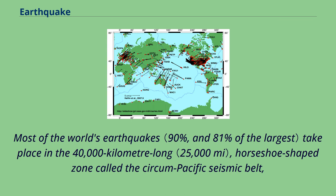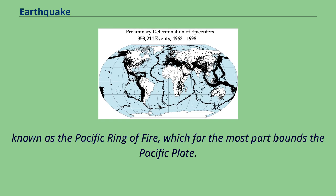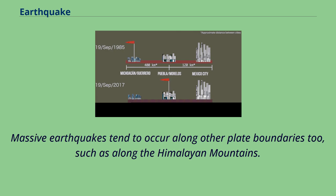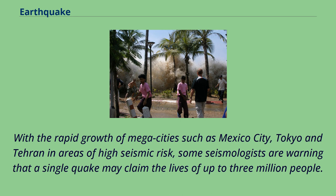Most of the world's earthquakes take place in the 40,000-kilometer-long, horseshoe-shaped zone called the Circumpacific Seismic Belt, known as the Pacific Ring of Fire, which for the most part bounds the Pacific Plate. Massive earthquakes tend to occur along other plate boundaries too, such as along the Himalayan Mountains. With the rapid growth of megacities such as Mexico City, Tokyo, and Tehran in areas of high seismic risk, some seismologists are warning that a single quake may claim the lives of up to 3 million people.